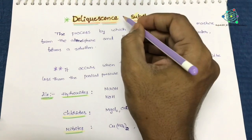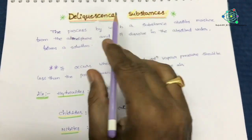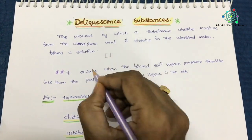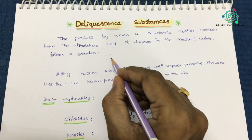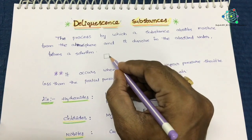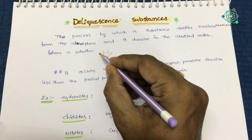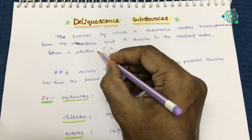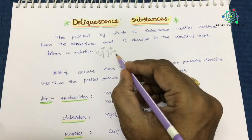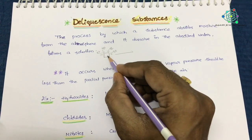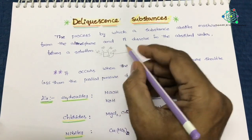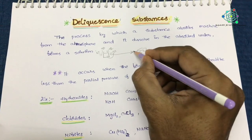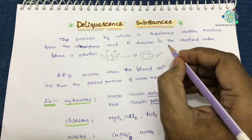So what is meant by deliquescence? Deliquescence means: if you take a substance, certain substances are there. If you take the substance and whenever you expose it to the atmosphere, these substances absorb water molecules — nothing but moisture which is present in the atmosphere. After that, these substances dissolve in the absorbed moisture and they form a solution. So this is what is meant by deliquescence.